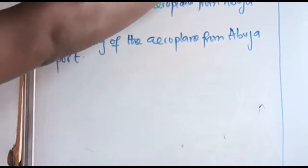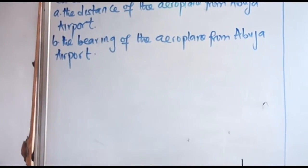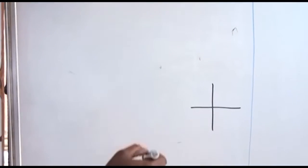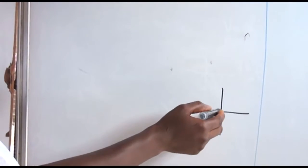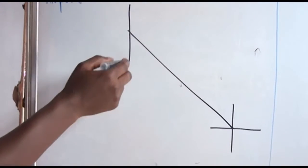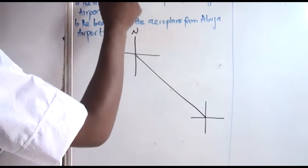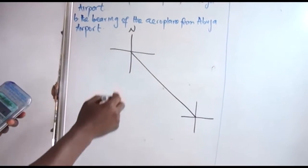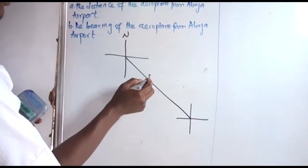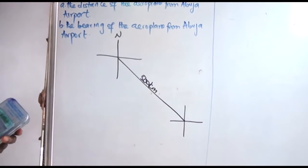Due north. So this is the first plane, due north. It flies due north. So this is the north, due north, with what? 500 kilometers.